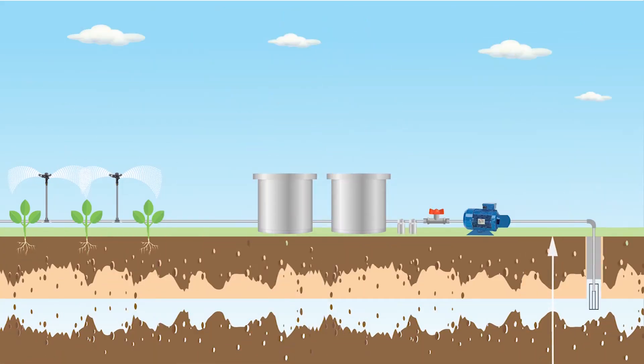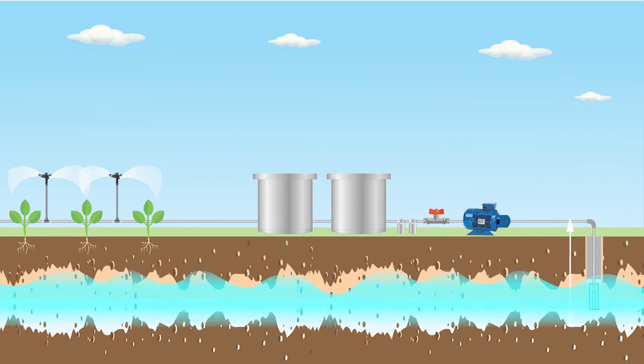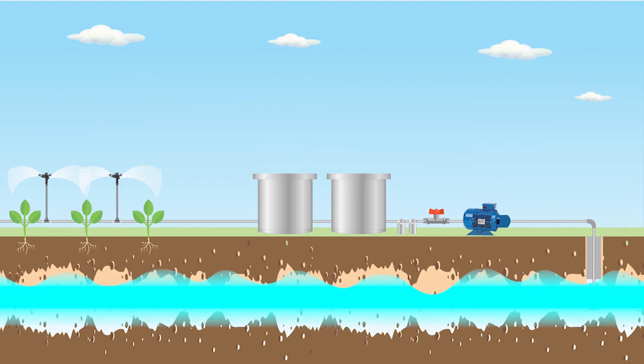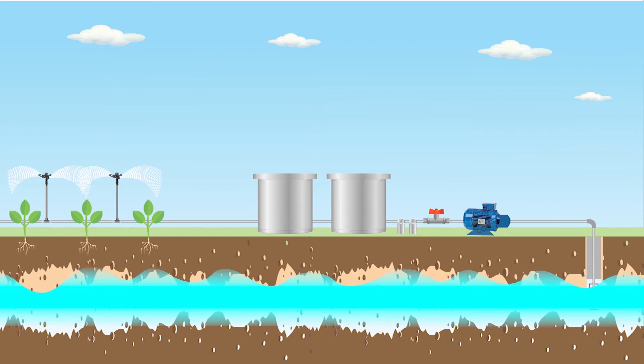The information about the water source includes height above the ground level or the depth from the ground surface, details of the pump to be installed, and also the quality of water in terms of purities or impurities present in it. Preparing a layout requires collection of basic farm data.